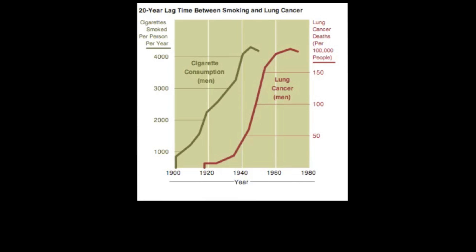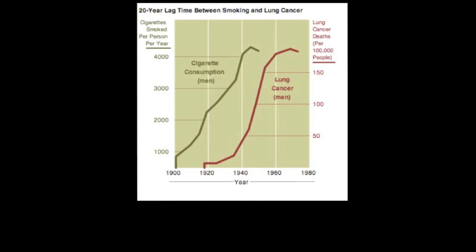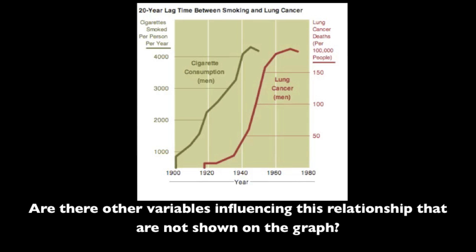However, just because we see that as one variable increases the other variable also increases, this does not actually tell us whether smoking causes lung cancer. It just tells us that there is a relationship between them — a correlation — but it doesn't indicate a cause. Simply by looking at this graph, we are not aware as to whether other variables not shown on the graph might have had an influence on the relationship.